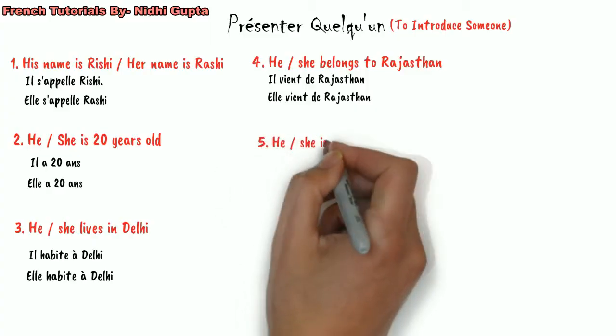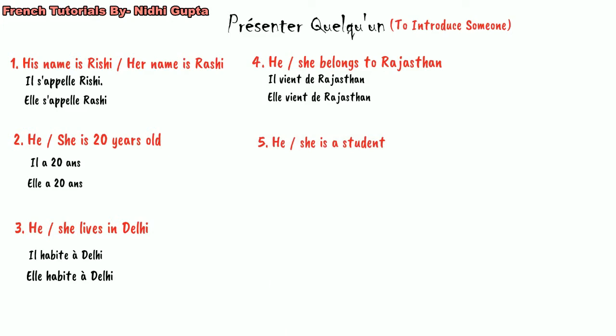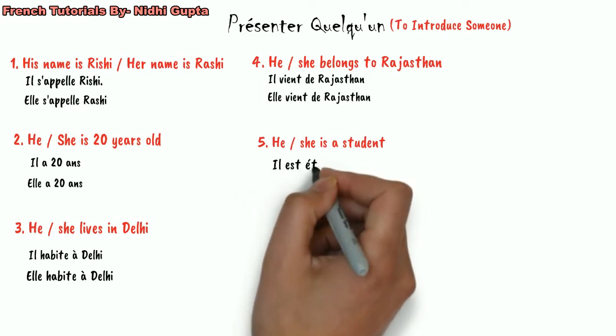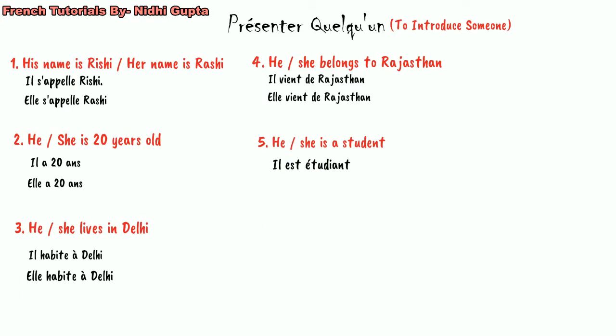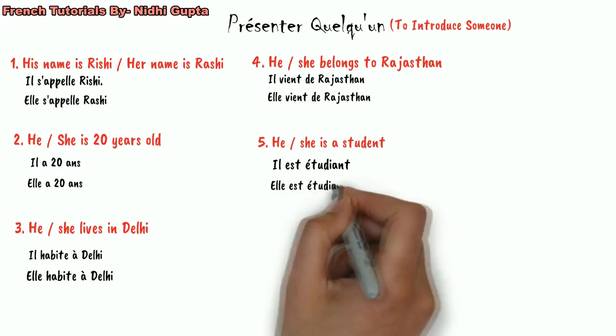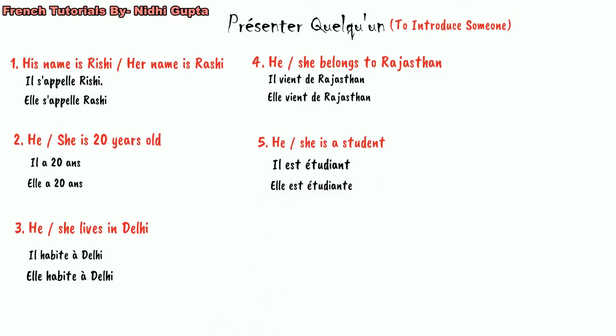Next, we can also talk about his or her profession — what he does or what his profession is. We would say 'il est' with his profession. If he is a student, we say 'il est étudiant.' And if Rashi is a student, we say 'elle est étudiante,' using the feminine form of the adjective.